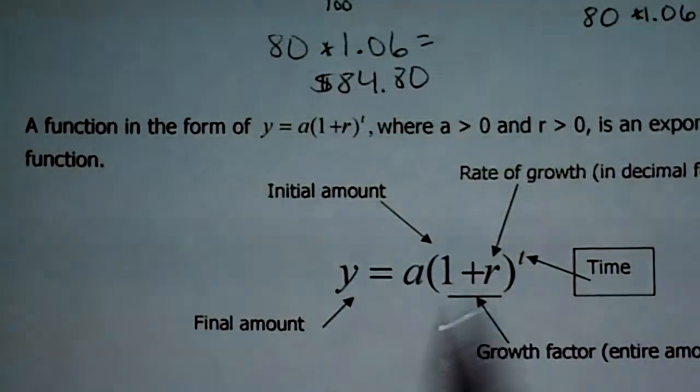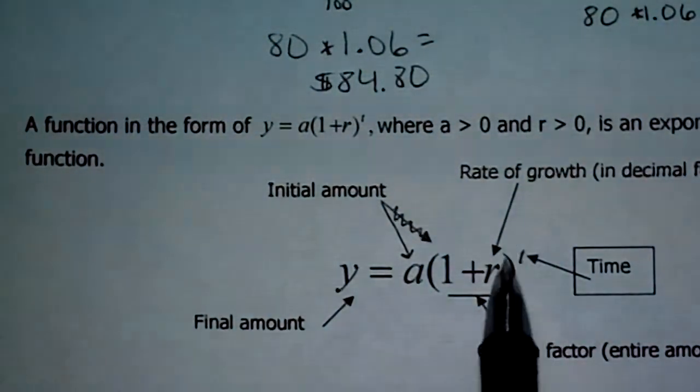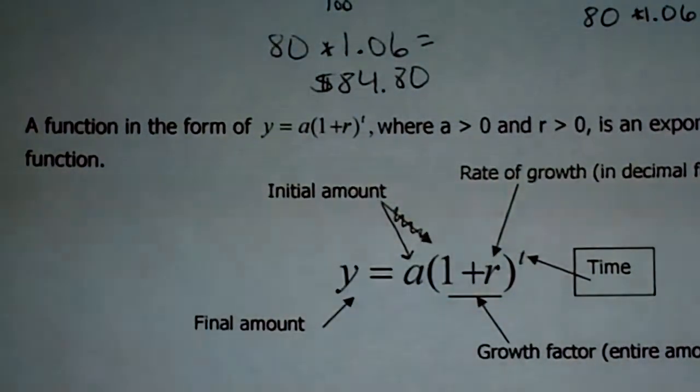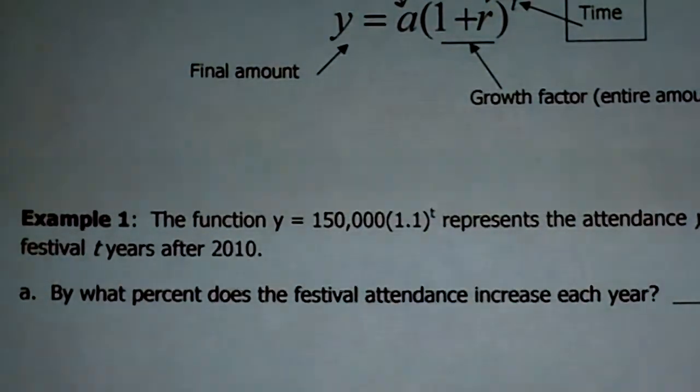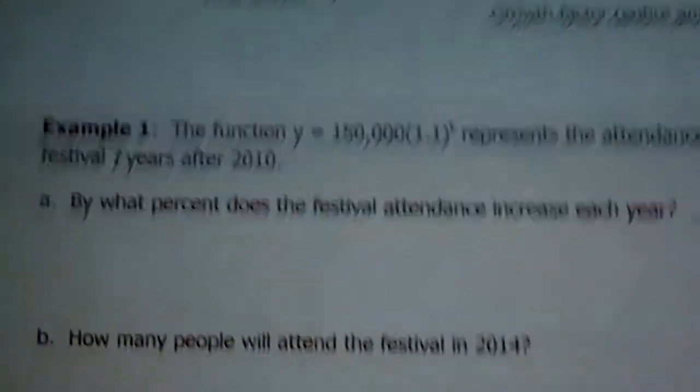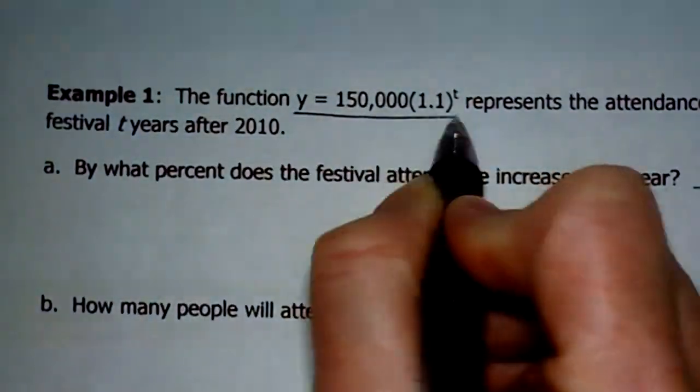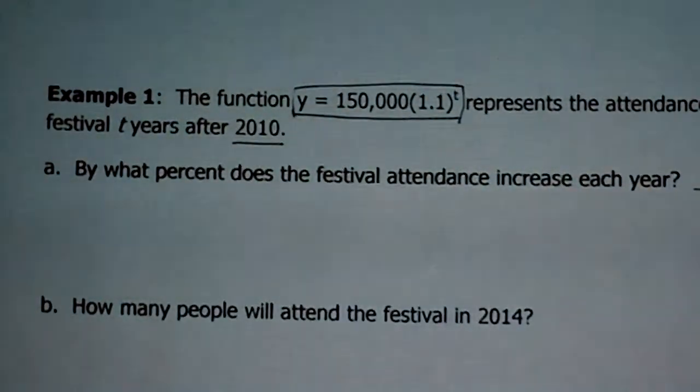So let's try some. I think we've already kind of identified all of these things for you. The arrow should be pointing like that. Hopefully I'll have that fixed on yours. A is still the initial amount. The rate of growth is the R in this, but you're going to make it a decimal. T is the time, and this whole amount is your growth factor. Okay. So the function y = 150,000(1.1)^t represents the attendance y at a music festival t years after 2010. Let me scooch this up a little bit. There we go. So first off, you're given an equation. I'm going to kind of box that. And you're given a date. Those are probably pretty important. Letter A asks you, by what percent does the festival attendance increase each year?